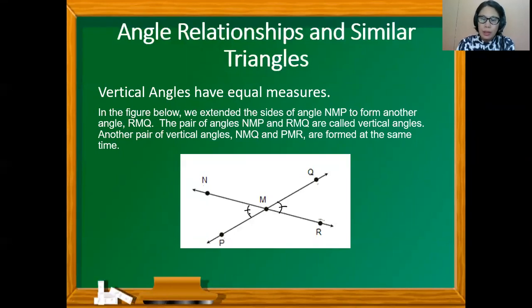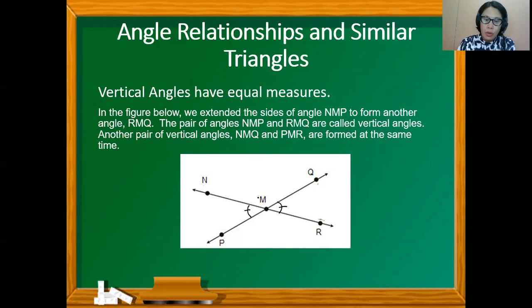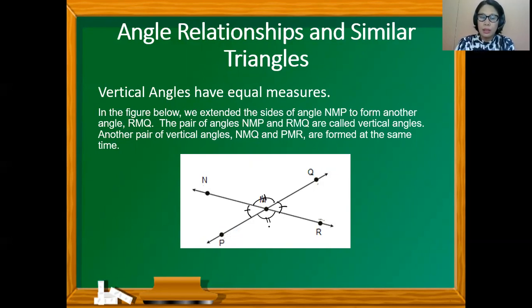Another pair of vertical angles created when two lines intersect are angles NMQ and PMQ. So vertical angles are congruent, and they are also called opposite angles.